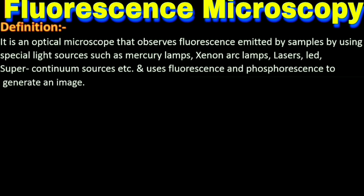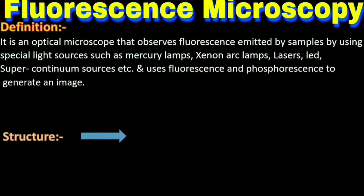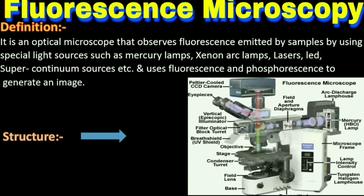After the definition, we need to understand the parts and structure of this microscope. Here is the structure of this microscopy. You can see the different parts. This is the light source, and we should keep in mind that we should avoid the halogen lamp because it will not produce monochromatic illumination. That's why we should use only mercury lamp, xenon arc lamp, laser, LED, or super continuum sources.